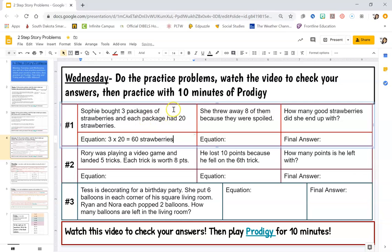All right, let's read what happened next. She threw away eight of them because they were spoiled, so she had 60, she threw away or got rid of or subtracted eight of them. So I know 60 minus 8 is going to be 52. So then my final answer right here, I should have 52 strawberries. Hopefully you all got 52 as well.